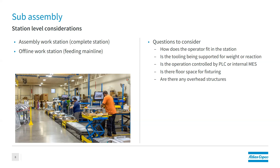Sub-assembly stations can be approached in two ways: an assembly workstation where the whole part is completed in that station, or an offline workstation feeding the main line. How does the operator actually fit in the station? In this image, a scissor lift presents the part higher so operators aren't bending over. We want to think about ergonomics — is it safe for the operator to be in that station? Is the tooling being supported for weight or reaction, and does a torque reaction arm actually fit naturally in that space?